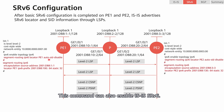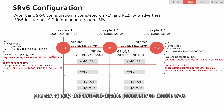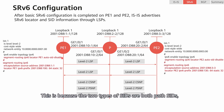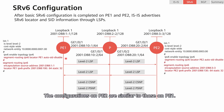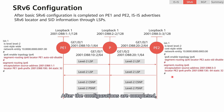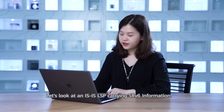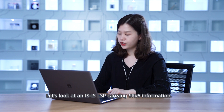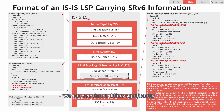This command can also enable IS-IS SRV6. When using this command, you can specify the auto-SID disable parameter to disable IS-IS from dynamically generating End and End.X SIDs, because these two types of SIDs are path SIDs which are not used in SRV6 BE scenarios. The configurations on P2 are similar to those on P1. After the configurations are completed, IS-IS advertises SRV6 locator and SID information through LSPs. Let's look at an IS-IS LSP carrying SRV6 information — we can see that it differs significantly from LSPs sent before SRV6 is enabled.